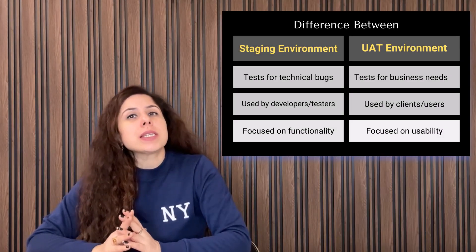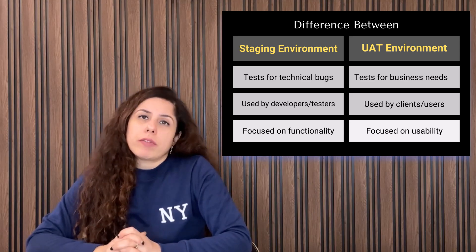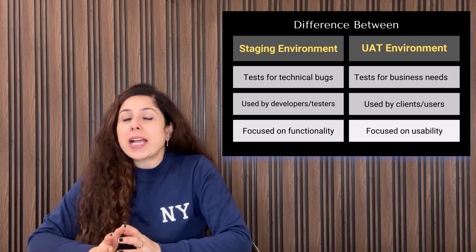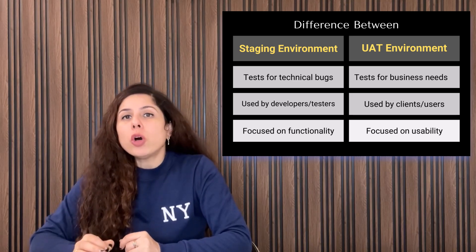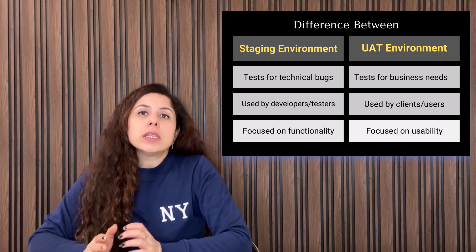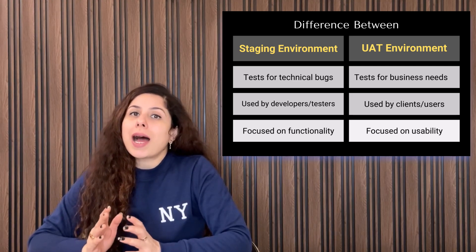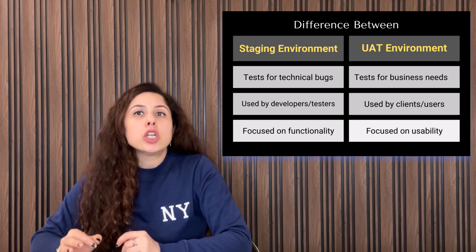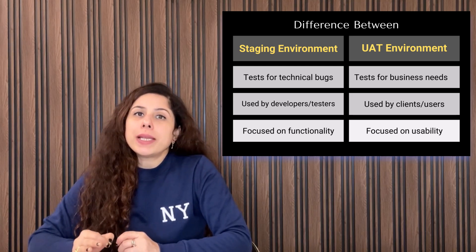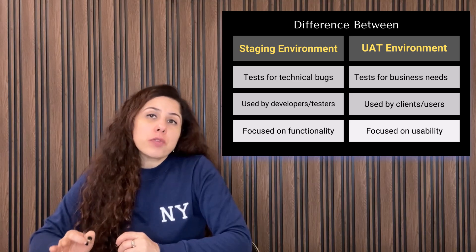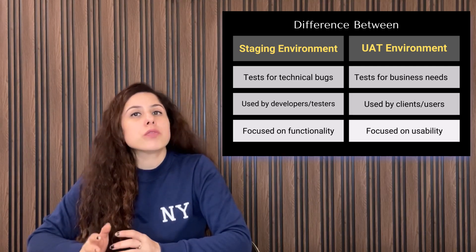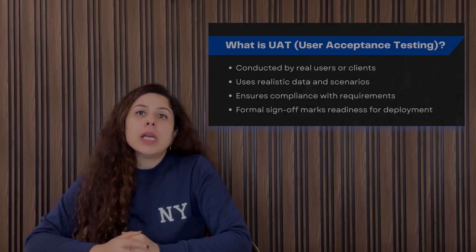Once the testing is done in the staging environment, the software moves to the production environment — this is where the actual users interact with the live application. In the staging environment, testing is done to catch technical bugs before making the application live, whereas in the UAT environment, the real users or clients test the software to check if it meets their needs.